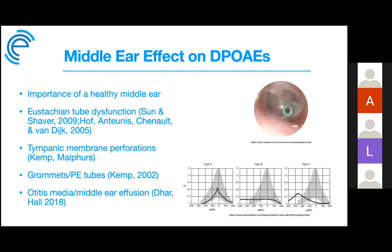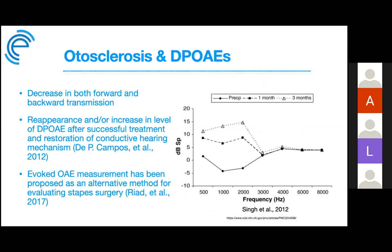Otitis media and middle ear effusions cause reduction or absence of OAE amplitudes, but after treatment or surgery, if the residual conductive loss is small and the cochlea is normal, OAEs will return. In otosclerosis, stapes-cochlear impedance increases substantially, reducing or eliminating OAEs. Studies including one by Gàmbus in 2002 show reappearance and even increased DPOAE levels after successful surgical restoration of the conductive mechanism.